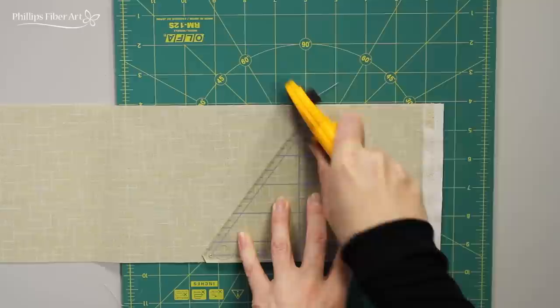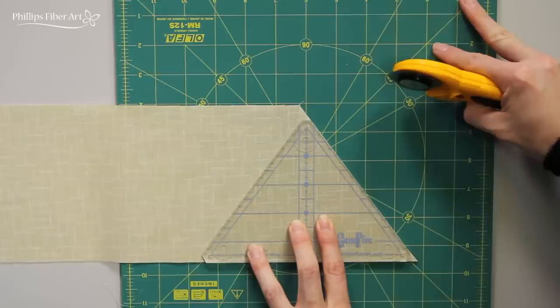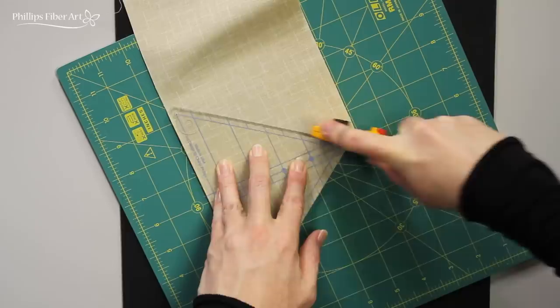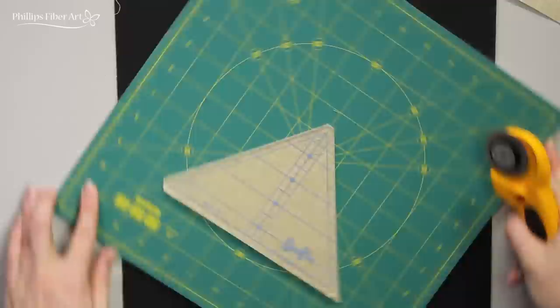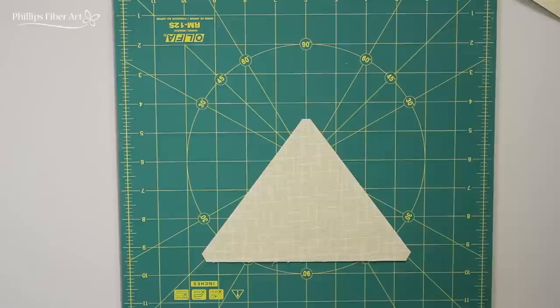Let's grab our Gem 5 and 10 tools. Let's start with the Gem 5, and we're gonna cut one piece out of this cream fabric. Cut all the way around the tool. Don't forget those little notches.